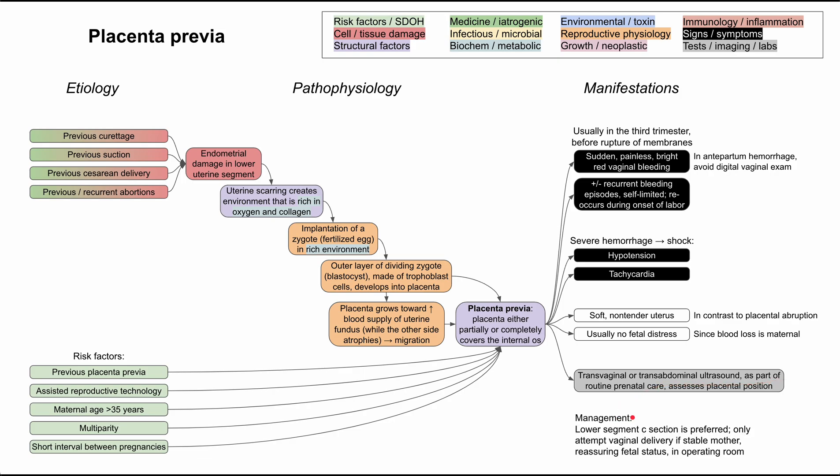A quick word on management: there are specific management steps depending on whether bleeding occurs before or after 37 weeks, but in general a lower segment c-section is preferred. There are specific criteria to attempt a vaginal delivery when there is complete coverage of the internal os — you want a stable mother, reassuring fetal status, and you should only attempt vaginal delivery in the operating room where you can convert to a c-section if needed. This has been a short video on placenta previa. Thank you for listening.